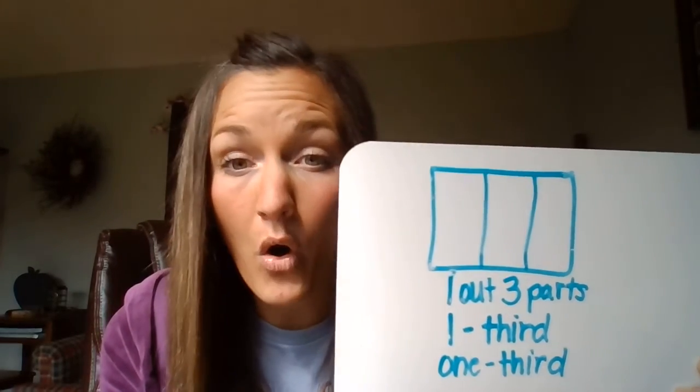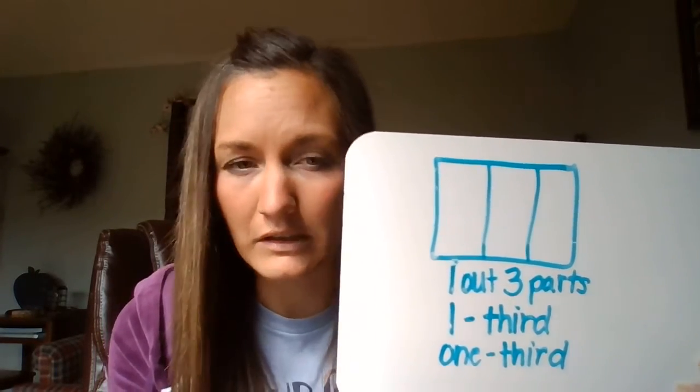Now, if I was going to name all parts, it would look like this. I could say that there are three thirds, because there's three of them. I could write it with the word three thirds. Three out of three parts. Or I could call it a whole.